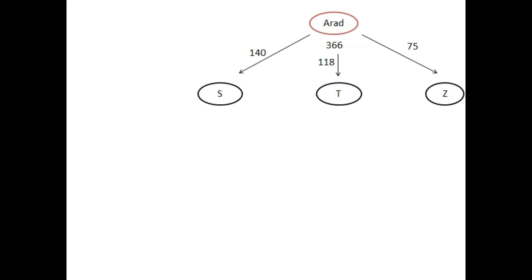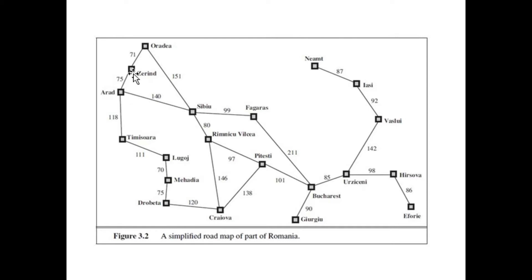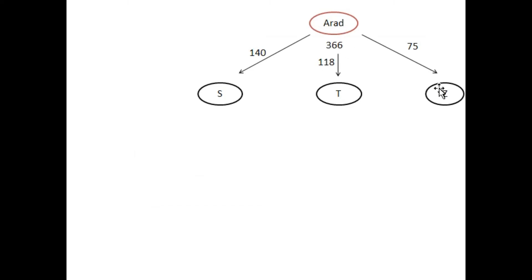There are three different child nodes. Looking at the map, node A is directly connected to Z, A is directly connected to S, and A is directly connected to T. All three of these cities are child nodes for city A. The distances between these cities are 75, 140, and 118. I write these distances here — the child nodes are S, T, and Z.